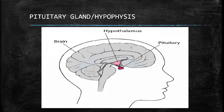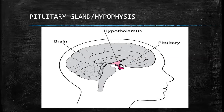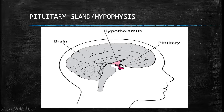Before we go further, I want us to discuss briefly a very important gland in our bodies which plays a very important role — the pituitary gland, also called the hypophysis. It is called the master gland because it controls many other hormone glands in the body. It is pea-shaped and found at the base of the brain. You need to know where it is located and its name, because it plays a very important role in our systems.